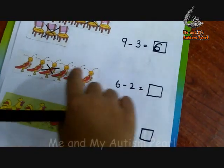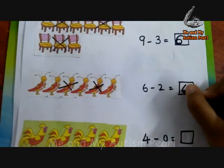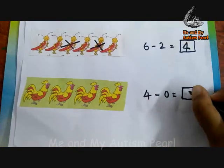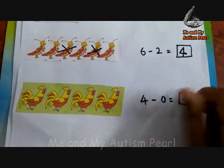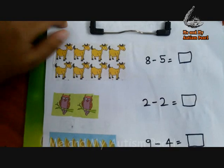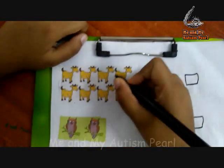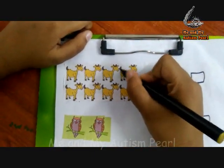Next sum: six minus two. Six subtract two — count the balance. One, two, three, four. Right answer.